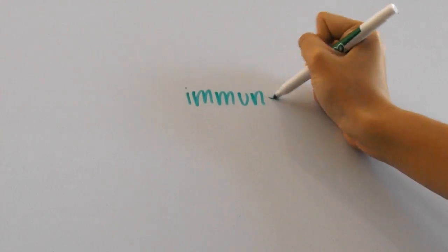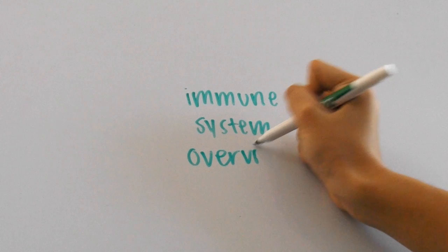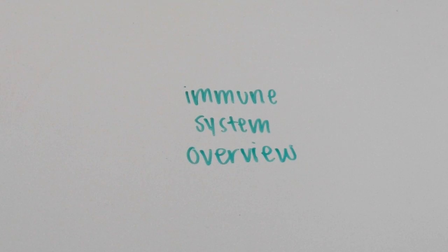All right, so there you go for your immune system overview. That's basically all the key points that you'll need to know either for your biology class or the AP exam. Thanks for watching, and don't forget to comment any questions that you might have.